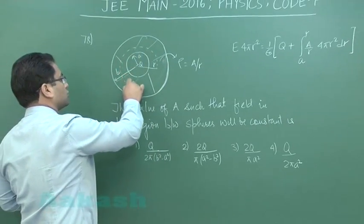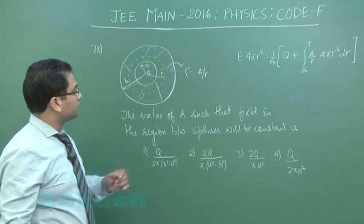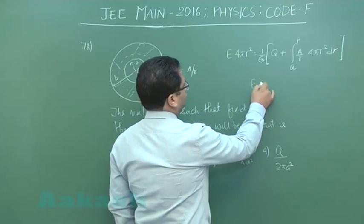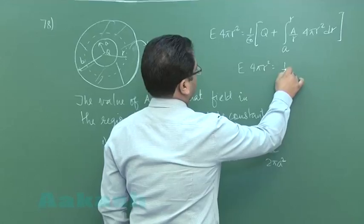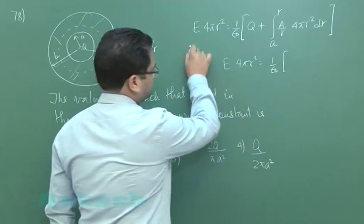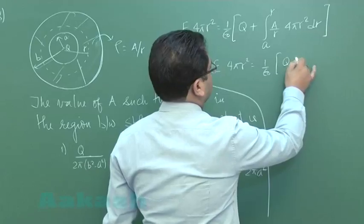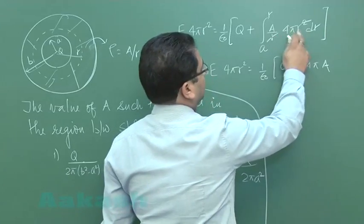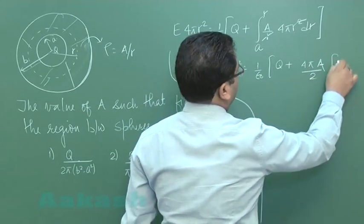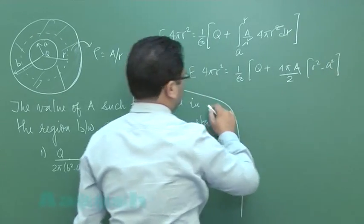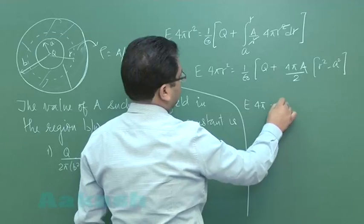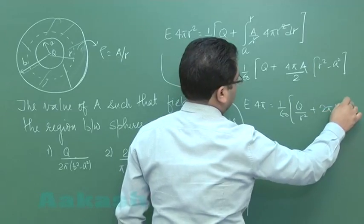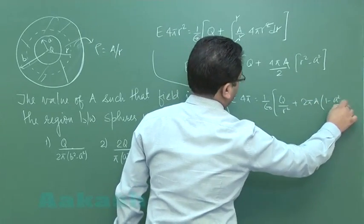The limit of integration is from a to r, calculating the charge enclosed within the Gaussian sphere. This gives E times 4πr² = 1/ε₀ times [q plus (4πa times (r² - a²)/2)]. Simplifying further: E times 4π = 1/ε₀ times [q/r² + 2πa(1 - a²/r²)].